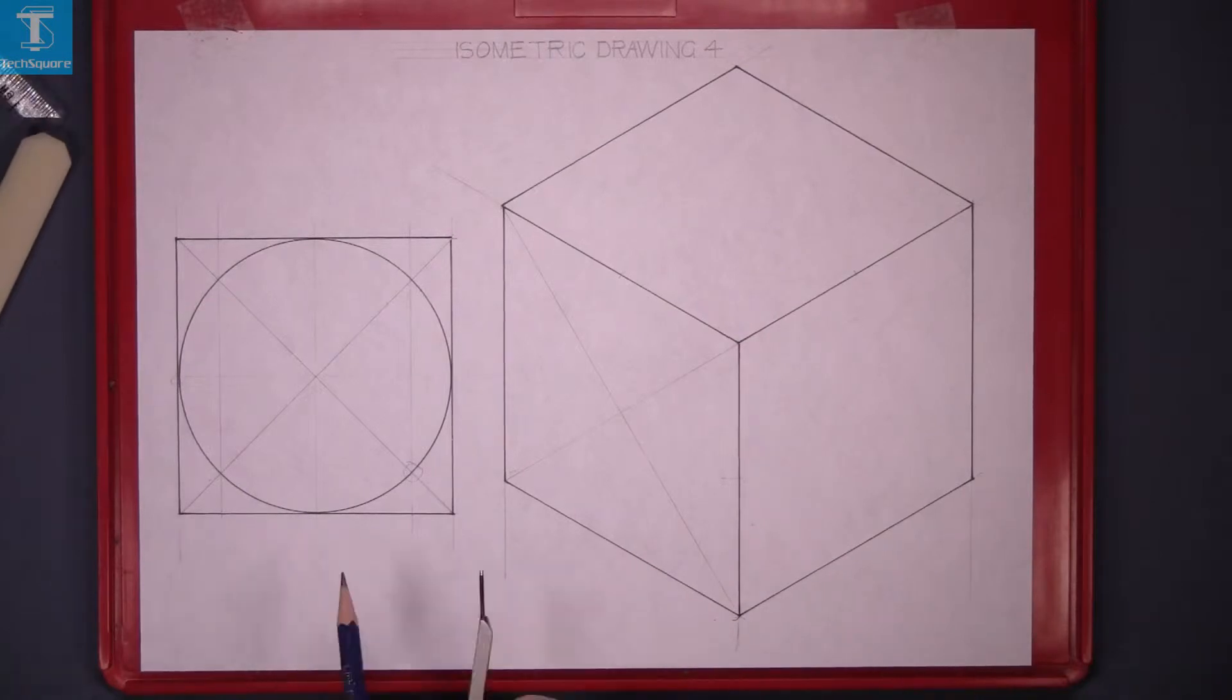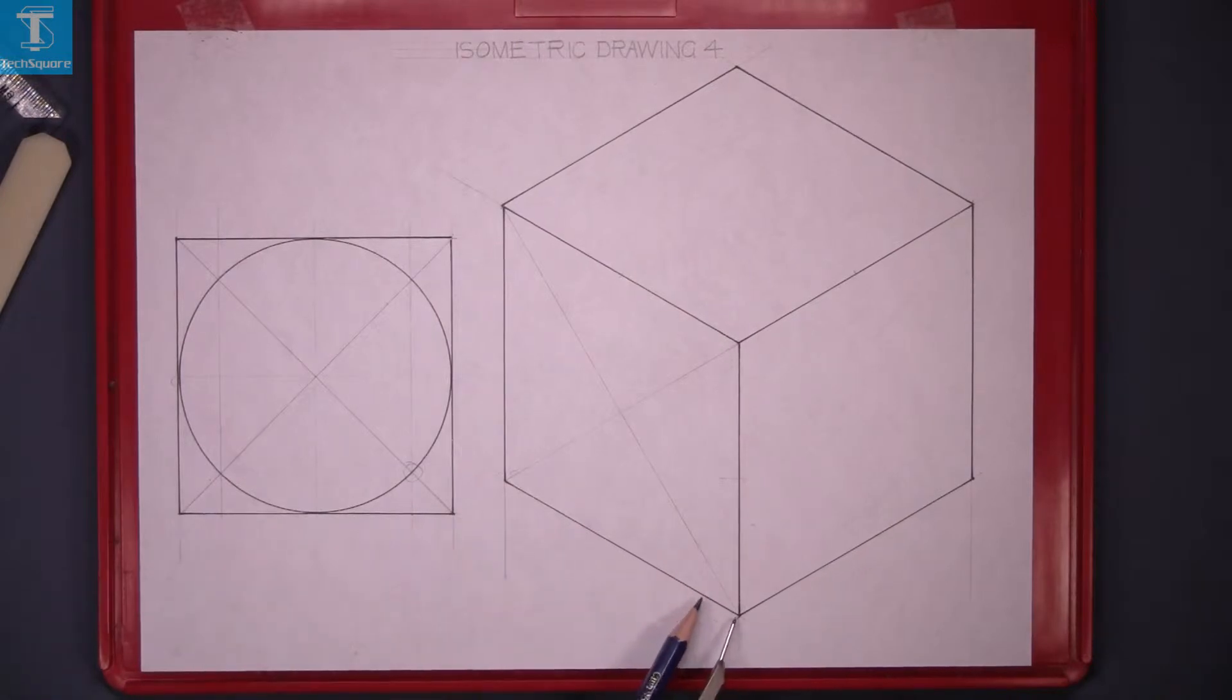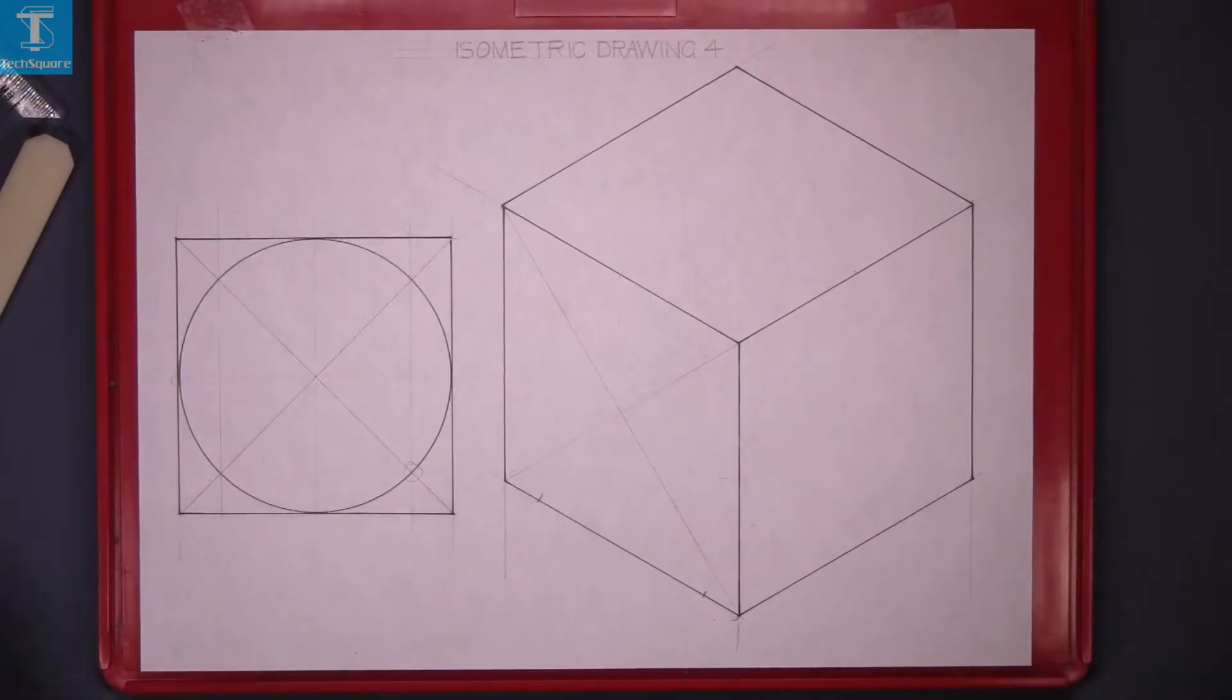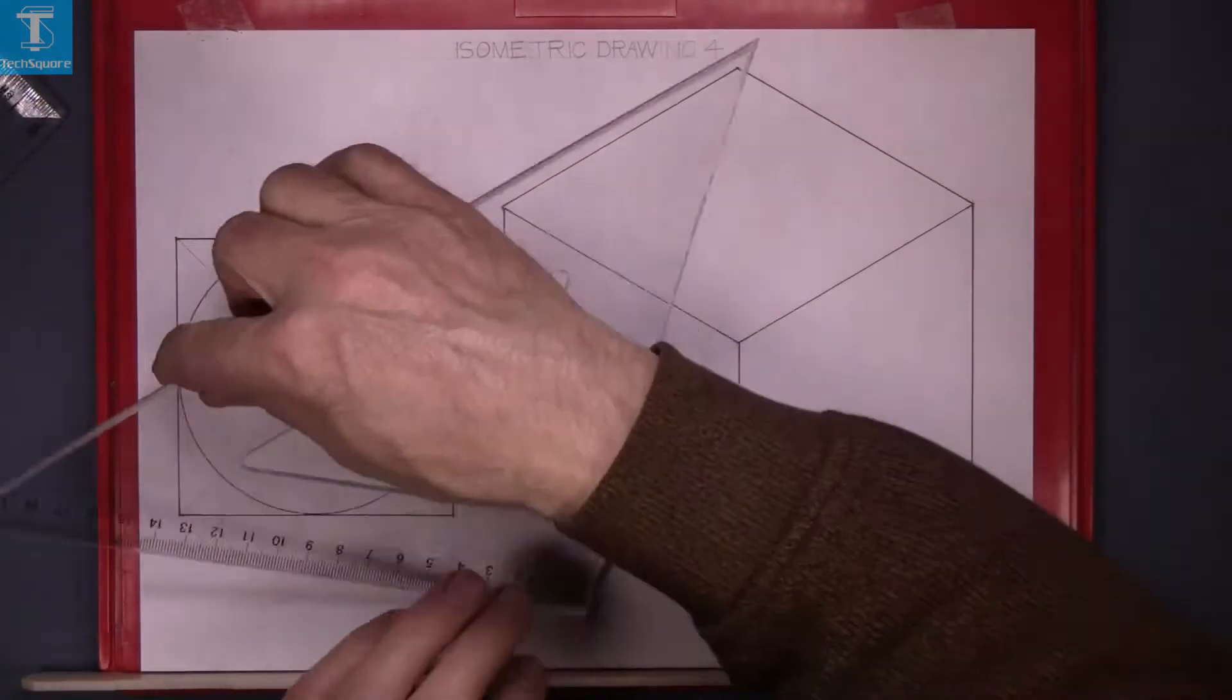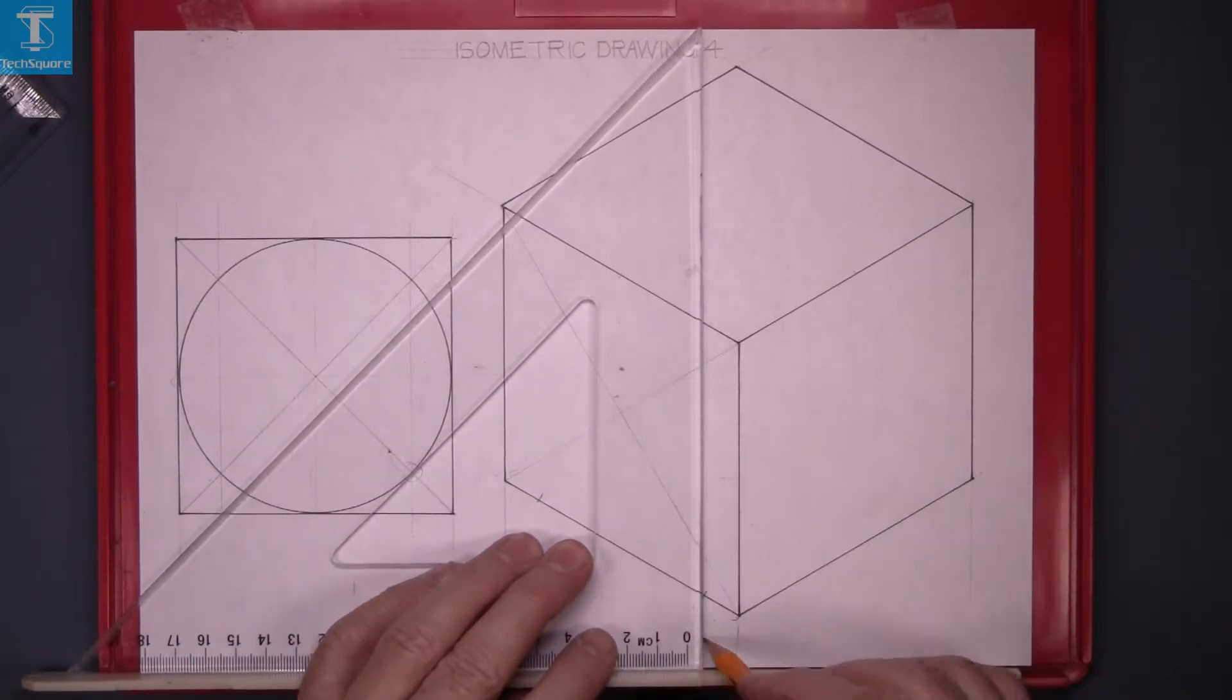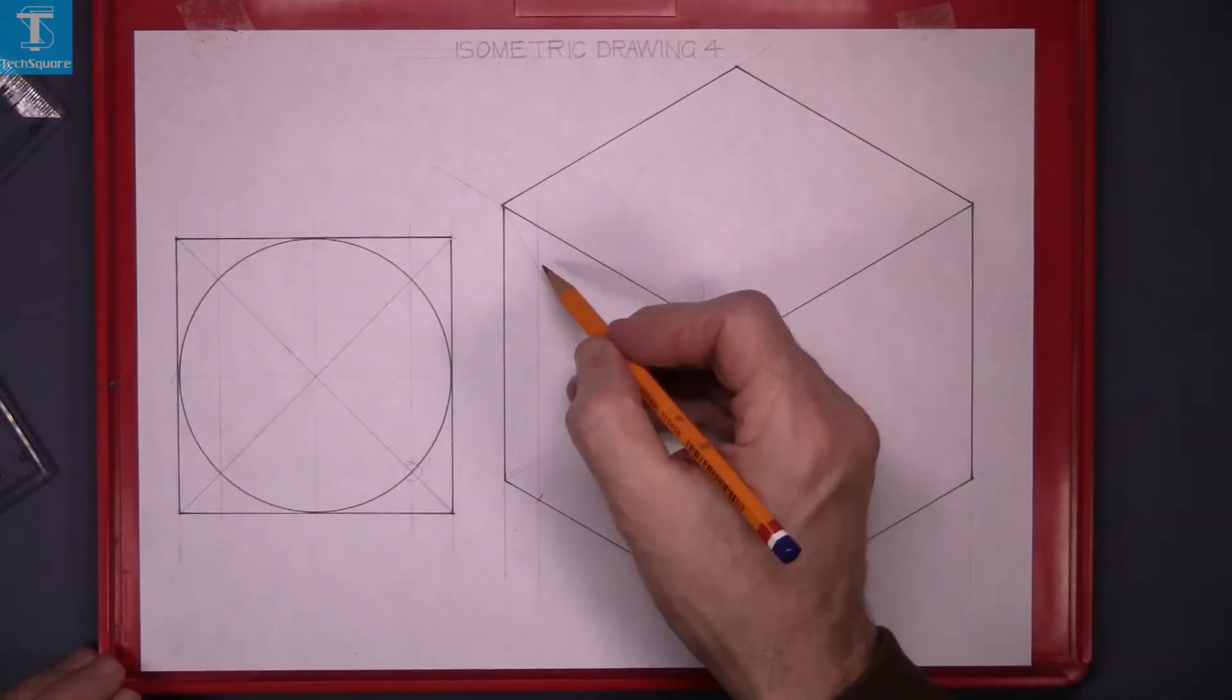Set the compass to that distance. Mark it along the bottom line. Do the same from the back. When you draw those two lines vertically, you get two points where they intersect with the diagonals.